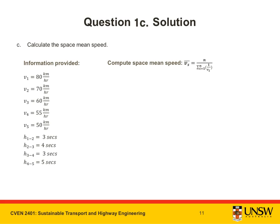The space mean speed is also an average of the spot speeds, but it is an average speed along a length of road. Using the same notation as before, V_i is the spot speed of vehicle i.